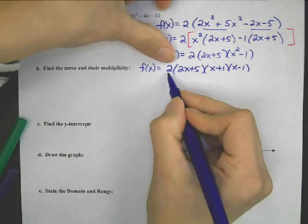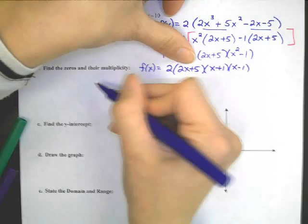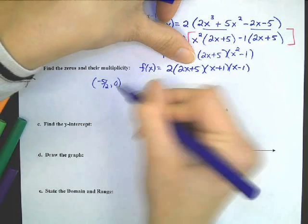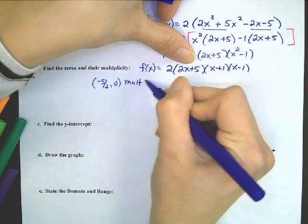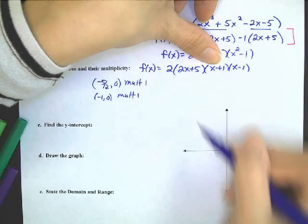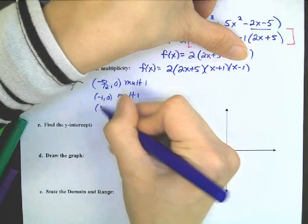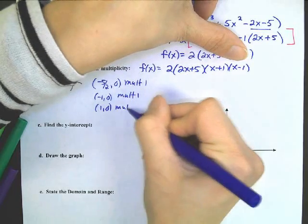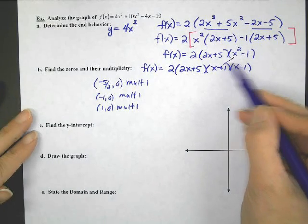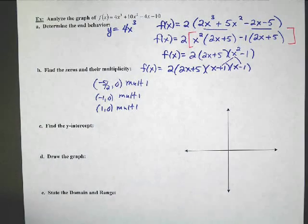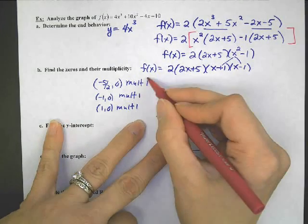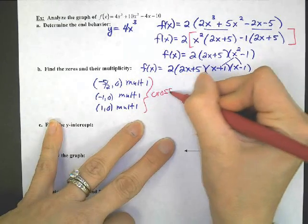So 2 is not an x and doesn't give us a zero. The first x-intercept is negative 5/2, 0 — multiplicity once. The next is negative 1, 0 — multiplicity once. Then positive 1, 0 — multiplicity once. Note that x squared minus 1 is a difference of squares giving two different answers — that's not multiplicity, those are two separate x-intercepts. If the multiplicity is 1, 1, 1 — odd, odd, odd — then you need to cross, cross, cross.